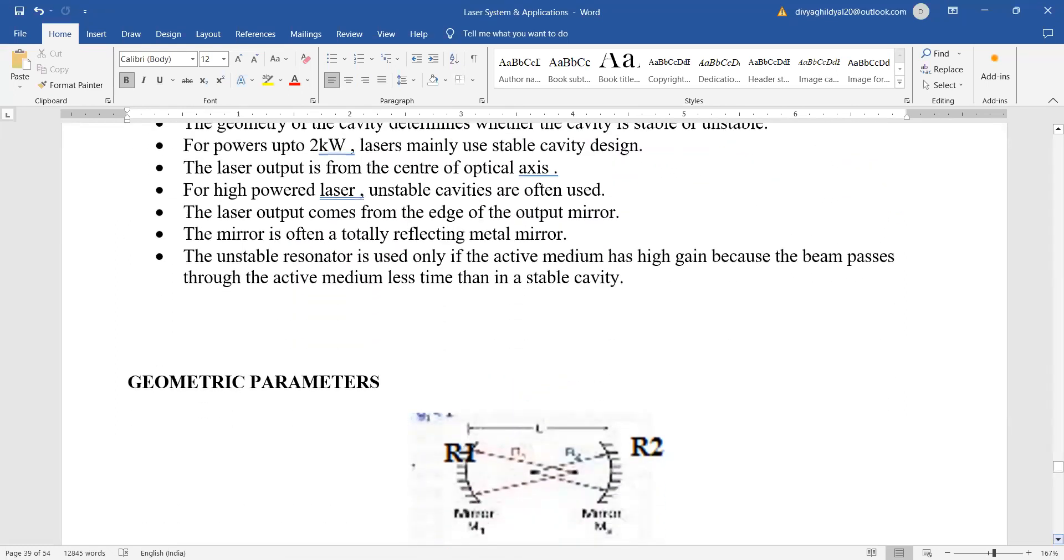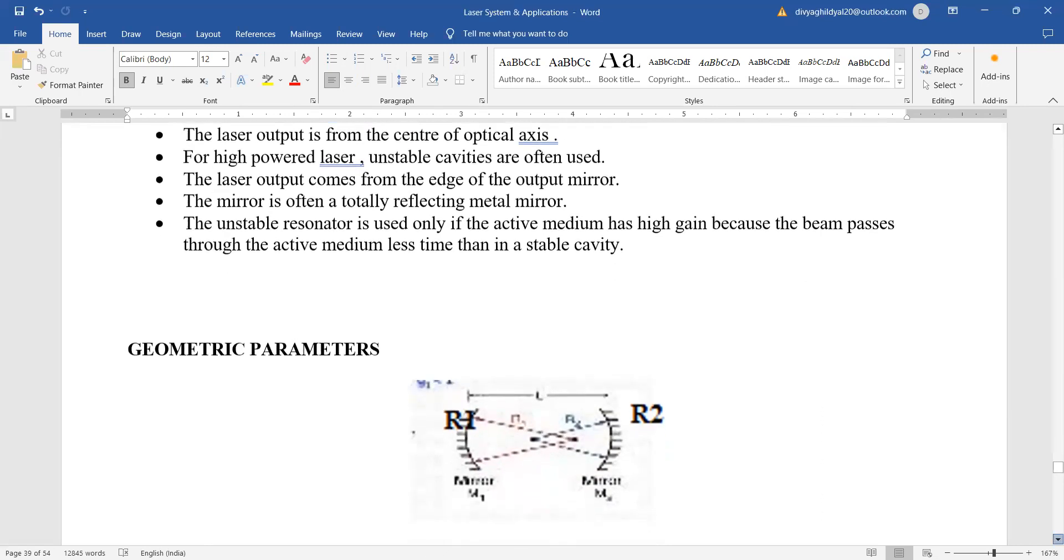For high powered laser, unstable cavities are often used. The unstable resonator is used only if the active medium has high gain because the beam passes through the active medium in less time than in a stable cavity.